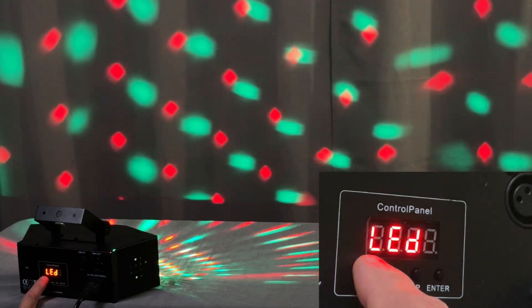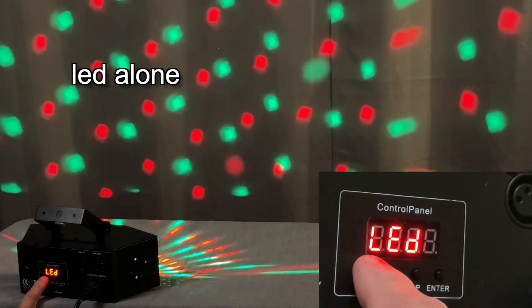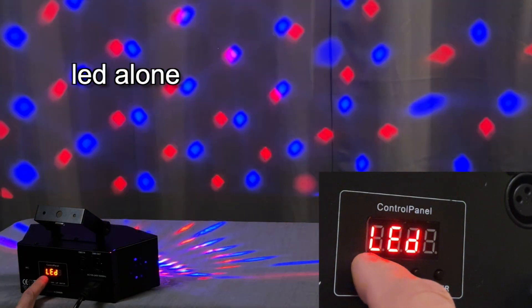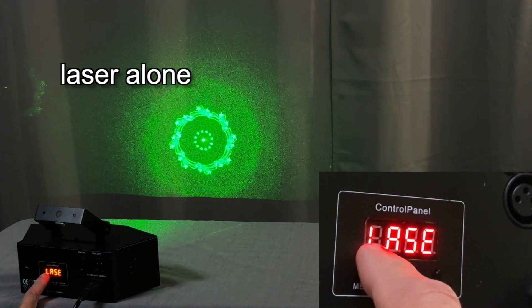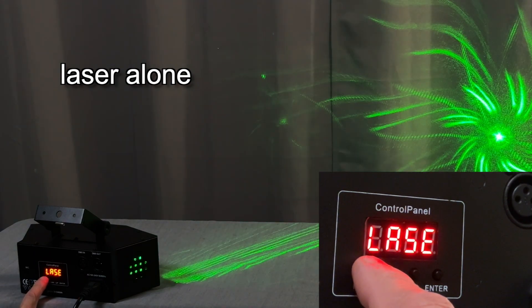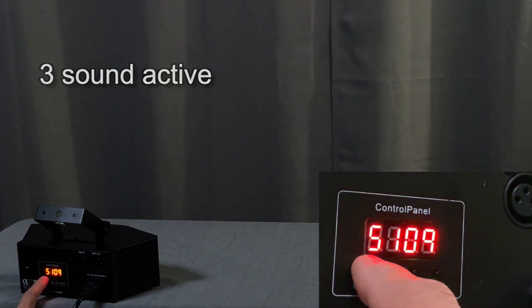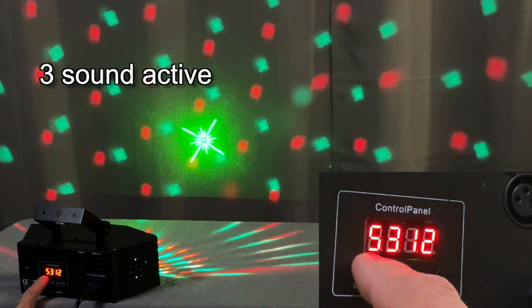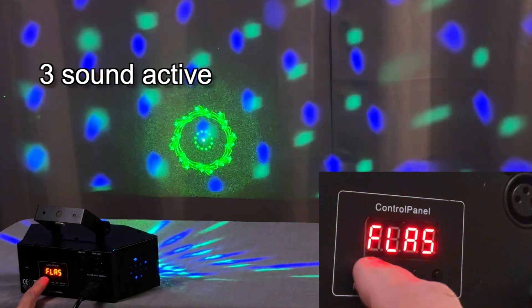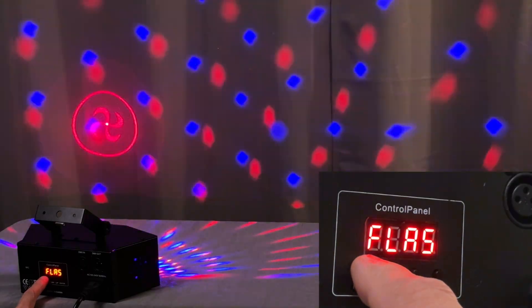And then you can cycle through each of the auto functions with each press of the menu button. You can also go to the LED by itself or the laser by itself. And then there's the three sound active functions which I'm going to show you with the remote in just a minute. And the final menu function is a flash which is a strobing effect.